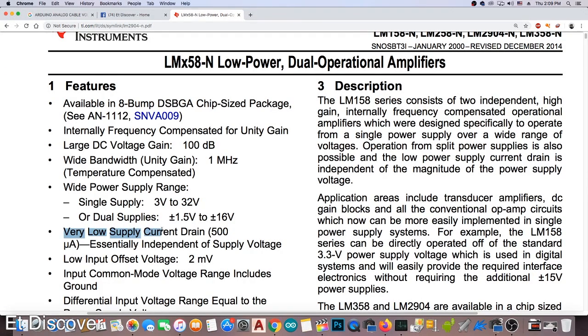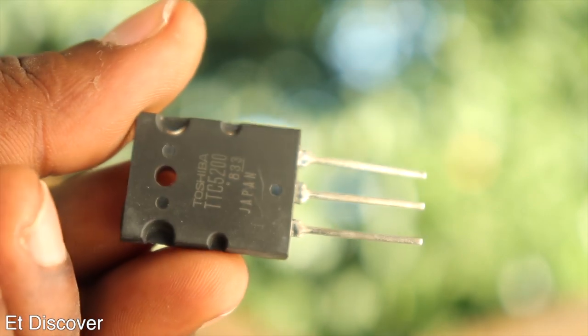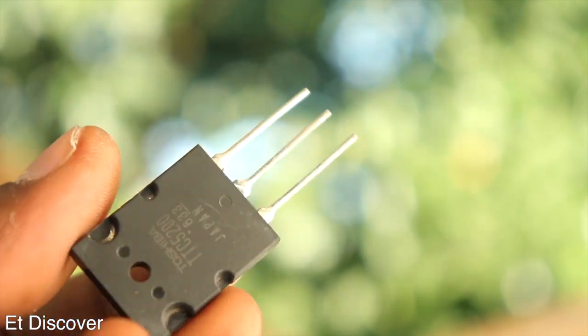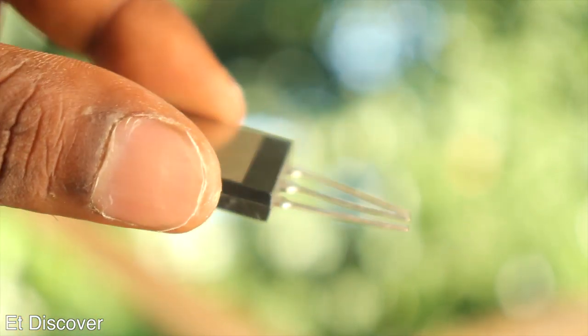We all know the LM358 is not capable of handling more voltage and more current. So that's why I am using here 2S5200 transistor to drive maximum voltage and high current. Hope you understand the basic idea of how it works.